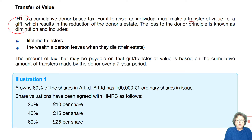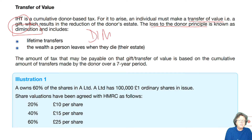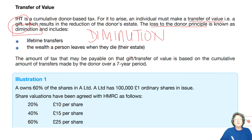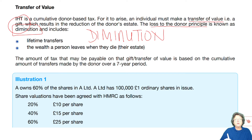It's called the loss to the donor principle, and we call it diminution — D-I-M-I-N-U-T-I-O-N. Please use, when you're doing inheritance tax, please use the terminology. This is a transfer of value, which is the loss to the donor principle or diminution — and spell it properly.